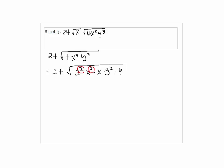Once we have exponents of 2, we can take out the factors. So, we have 24 times 2 times x times y, without the exponents.